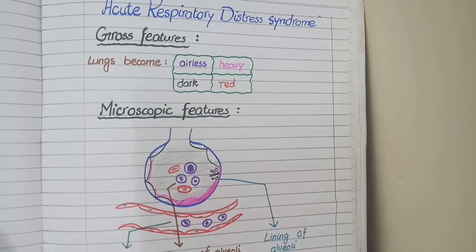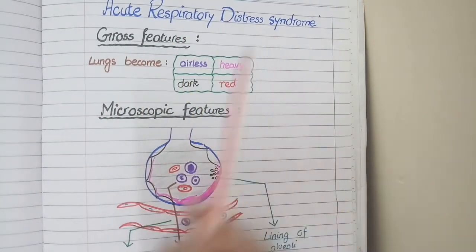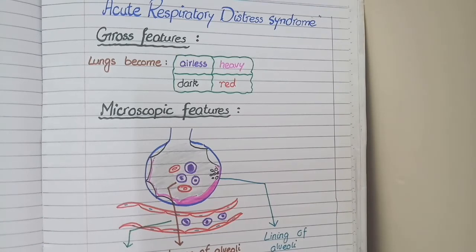In this video we will study the pathology of acute respiratory distress syndrome. First of all you need to understand its brief pathophysiology.